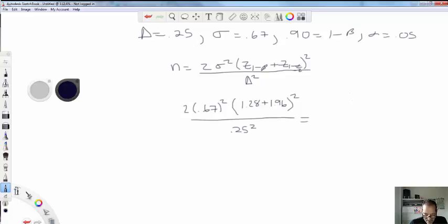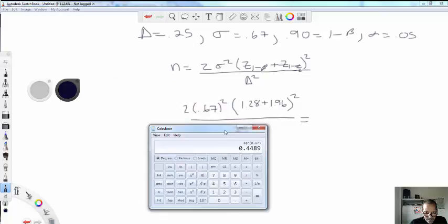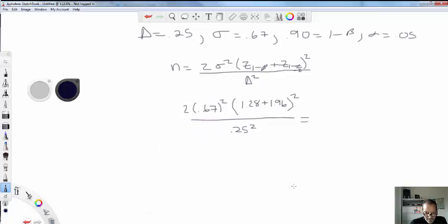0.67 squared and we get 0.4489, right? So that's going to be 0.4489 times 2, times 2 is equal to 0.8978. So we get 0.8978.